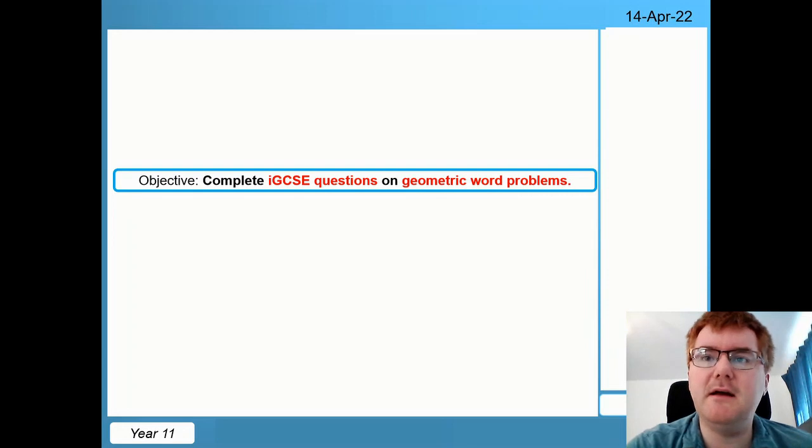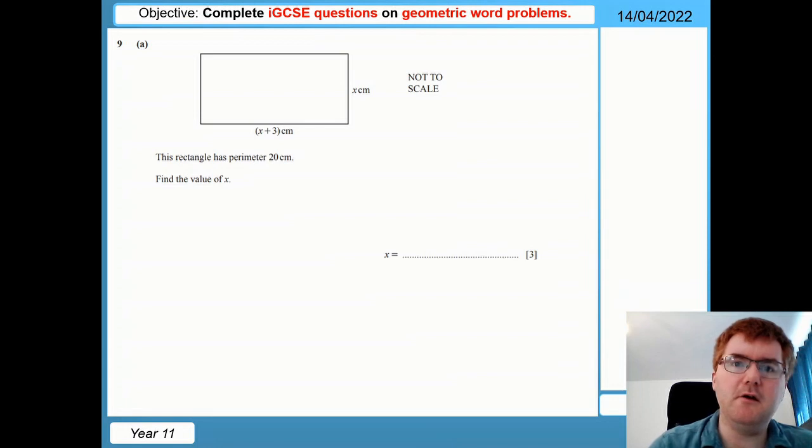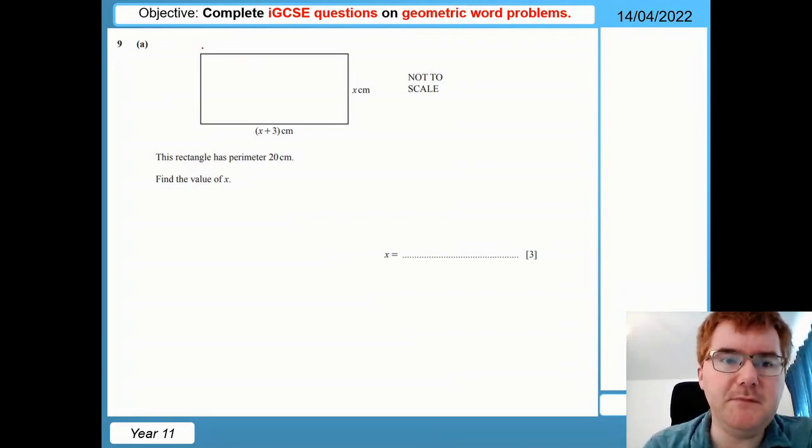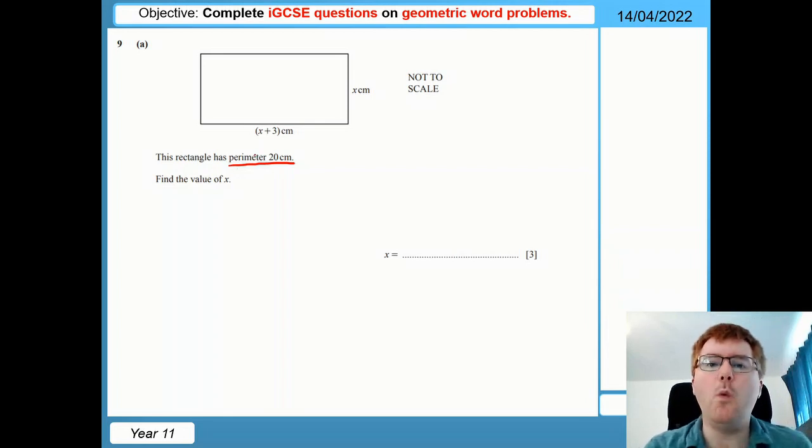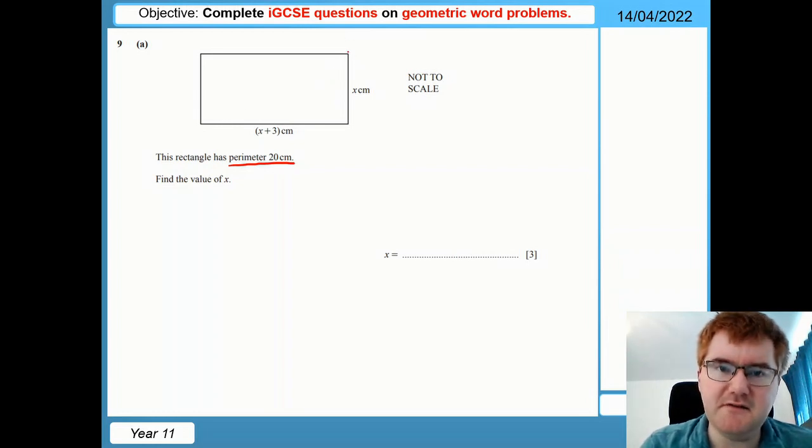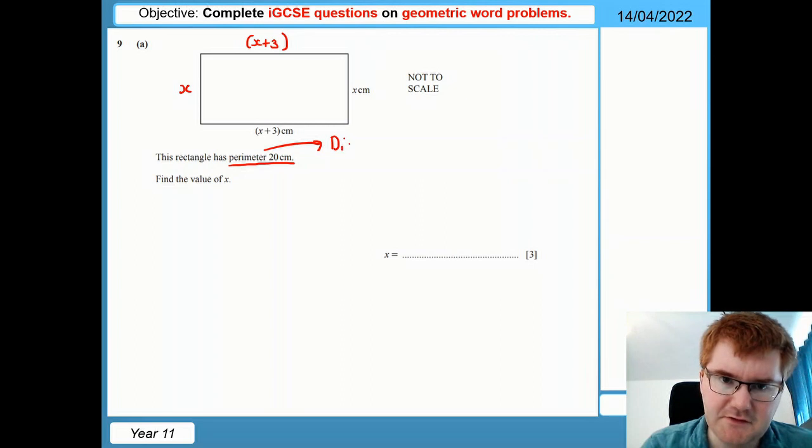This comes from a 0580 paper in November 2021, paper 4 question 9. So we have a rectangle here. It has a perimeter of 20 centimeters. Notice you're underlining the key language here and find the value of x. So this is a nice warm-up question. The first thing to notice, it is a rectangle. So this is x here. This has to be x as well. And likewise, if this is x plus 3 at the bottom, this has to be x plus 3 at the top. Now remember the perimeter means the distance around the outside.